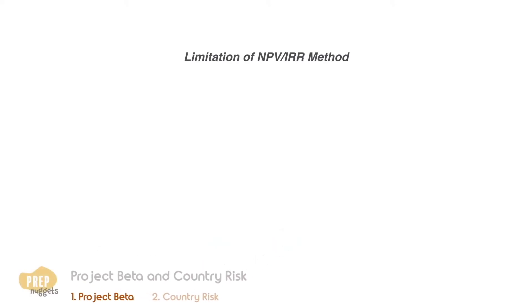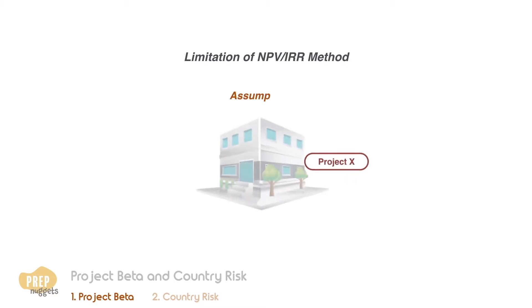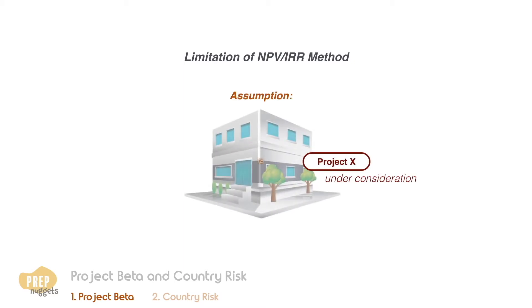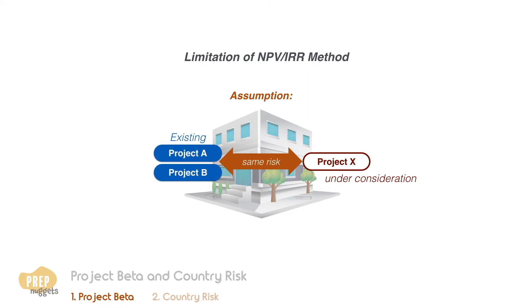Recall in an earlier lesson, we learnt that one of the limitations of the NPV or IRR method is the assumption that the project under consideration has the same level of risk as the firm's existing projects. This is because when we calculate the WACC of the firm, all the component costs are due to the firm's existing projects.